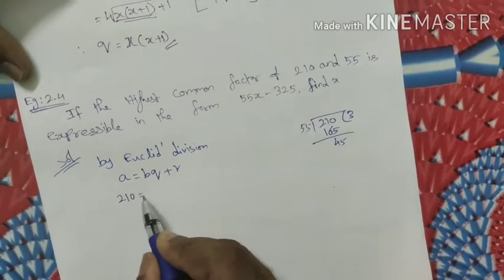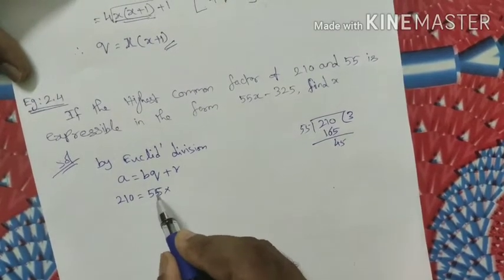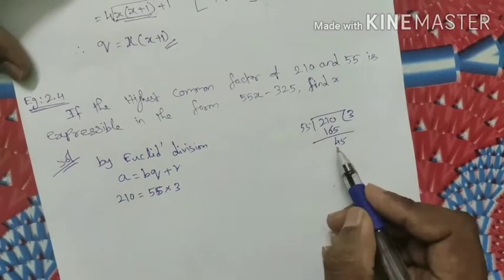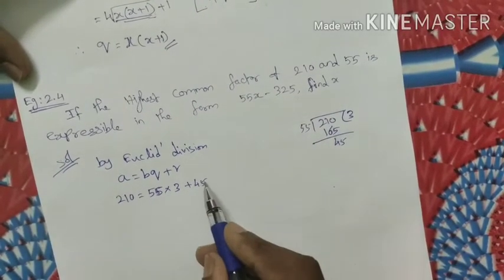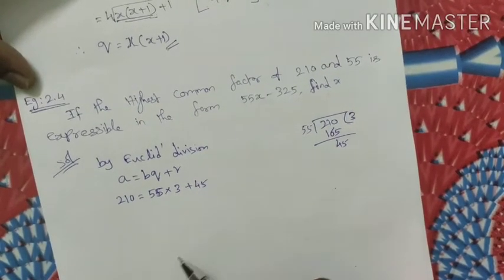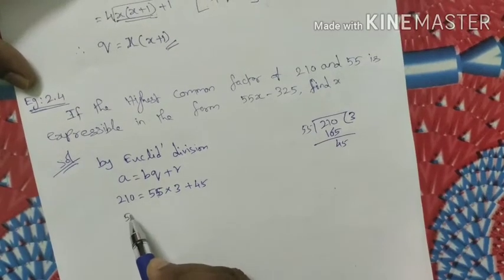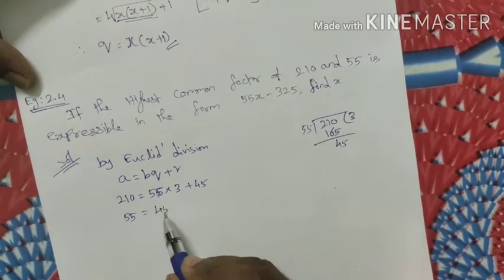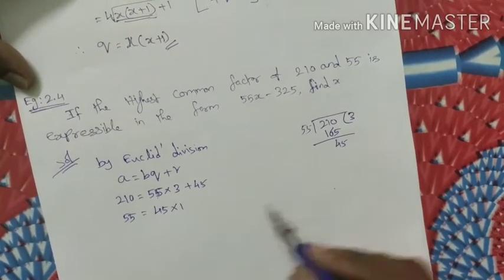The biggest number is 210, divided by 55. Three times 55 is 165, so 210 divided by 55 gives quotient 3 and the remainder is 45. Now we bring down the remainder. In the next step, the divisor 55 is divided by the remainder 45, which is possible only one time.